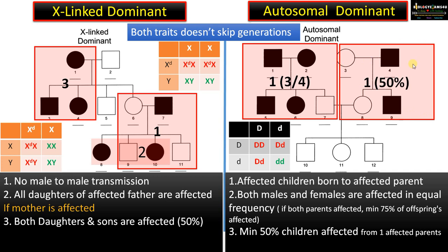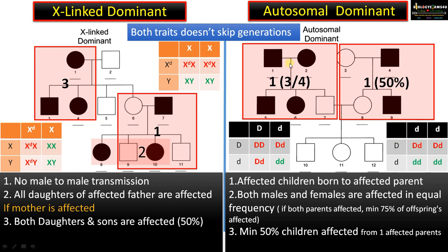Point number 2: if one of the parents is affected — here you can see the father is affected. If it were an X-linked dominant trait, then definitely the daughter would also get affected and the son would not get the disorder. This would rule out the possibility of X-linked dominant trait. Here, one of the parents is affected, so the gametes are capital D and small d. The offspring are Dd, Dd, dd, and dd. The green indicates not affected, whereas the red indicates these offspring are affected — indicating that a minimum of 50% of children are affected. Here also you can see out of 2 offspring, one is affected.